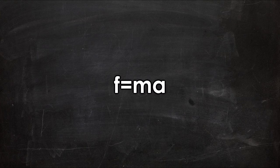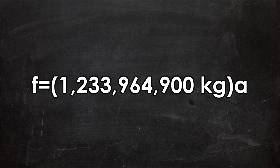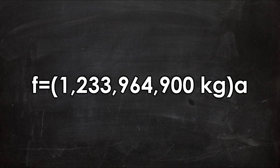Since F equals MA, we need to know the mass and the acceleration of this period of jump squat in order to find force. We know that the mass of Steve with gold is 1,233,964,900 kilograms, but we need to find acceleration.